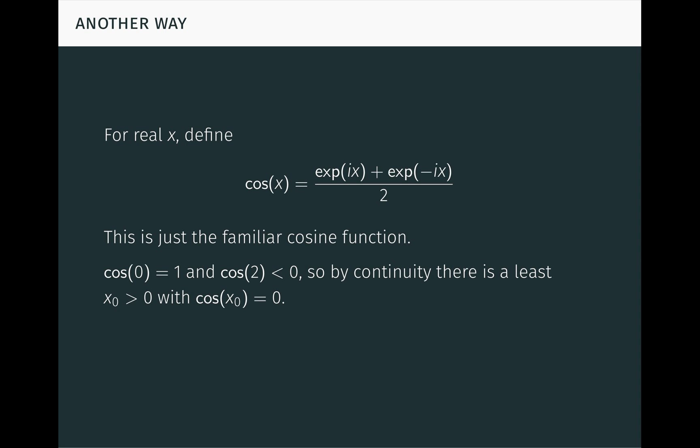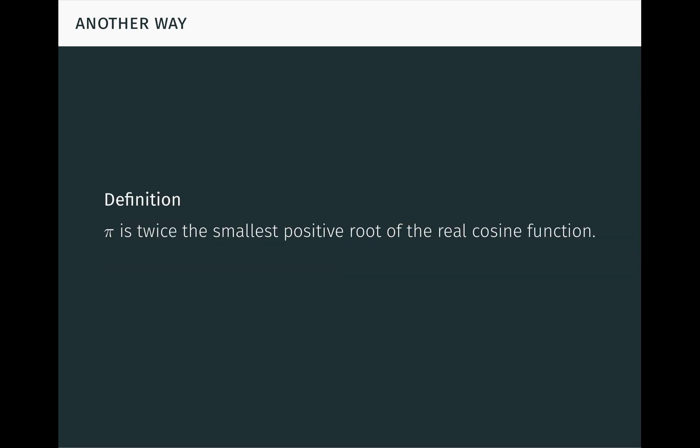Since this is just the familiar cosine function, we know that that number has to be pi over 2. So, we can define pi to just be 2 times this number. This leads us to an analytic definition of pi. Pi is just twice the smallest positive root of the real cosine function. We can derive everything that we need from this starting point, including the geometrical characterizations of pi.